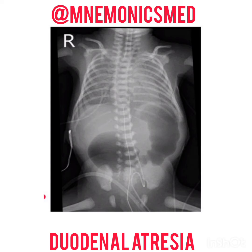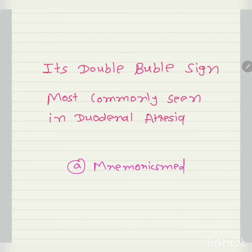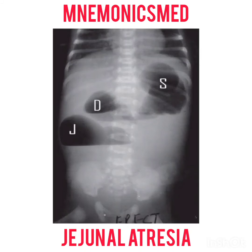This radiological image shows duodenal atresia. It is also called the double bubble sign and is most commonly seen in duodenal atresia. You can find it in MCQs based on its symptoms.